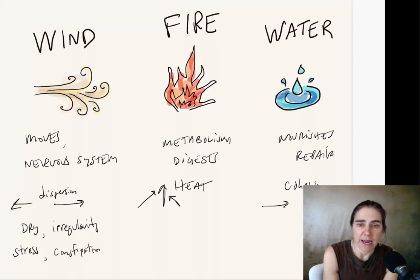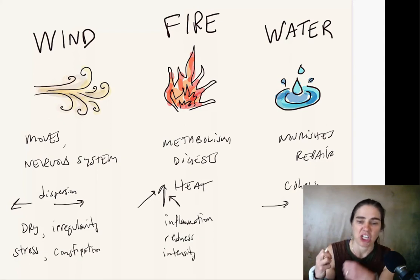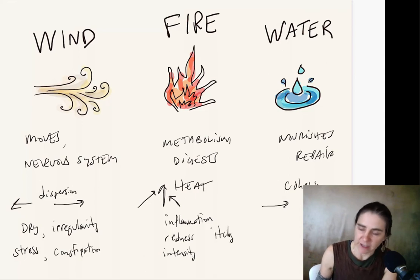There are these three different ways that energy moves in the body and all of these have attributes. The better we understand the attributes, the more we can understand the nature of your allergies. If you have allergies that are more caused by wind, you'll have an underlying dryness. They might come and go. There might be an irregularity. You might notice it's really aggravated by stress. You might notice there's constipation involved, or alternating constipation and loose stool, which would reflect that irregularity.